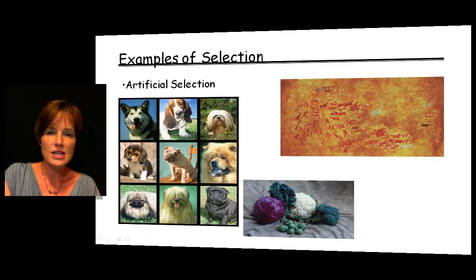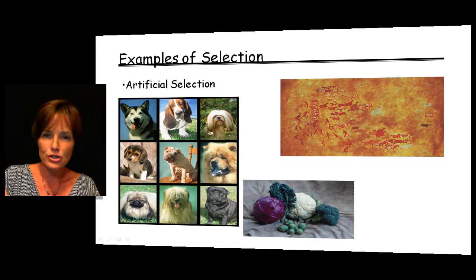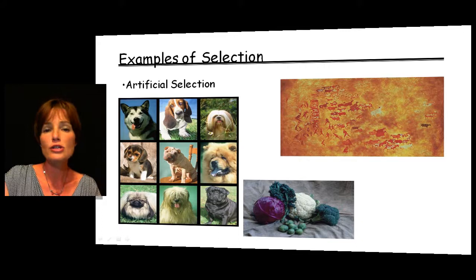If you take this same idea and apply it to natural selection, in natural selection it would be the environment doing the selecting rather than man. But if man is able to artificially change what a population looks like, then we would expect that natural selection could do the same. It may take a longer period of time, but certainly over hundreds of generations, natural selection should be able to produce quite a lot of variety from that original common ancestor.